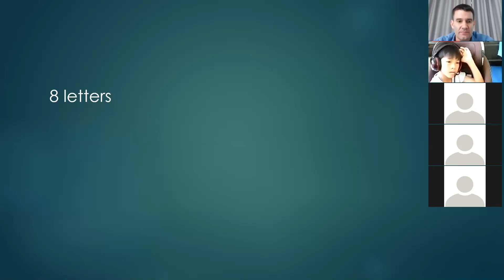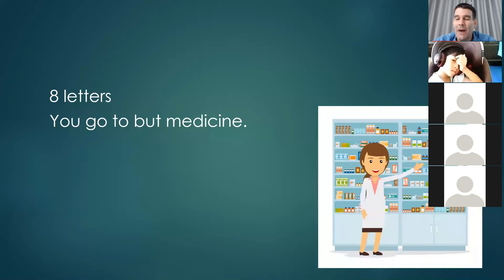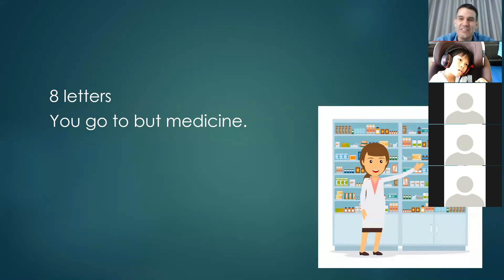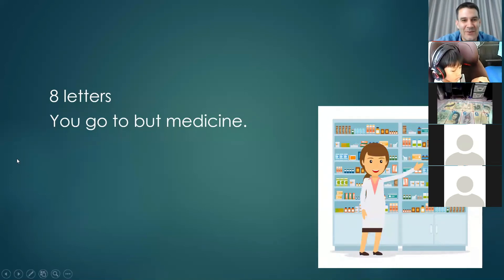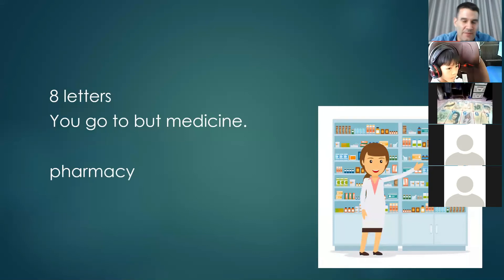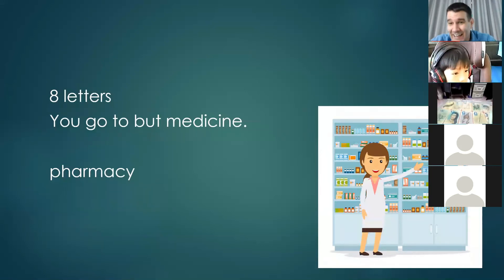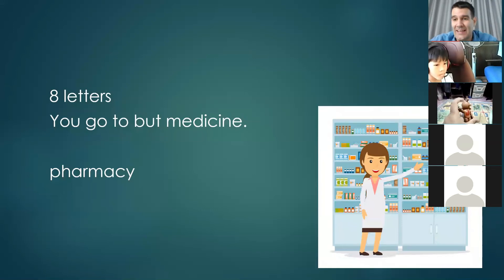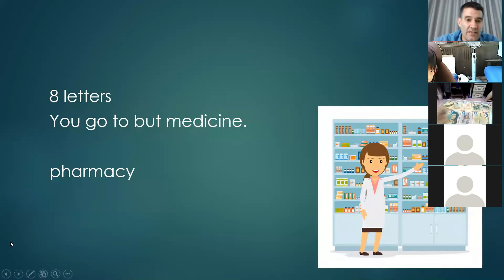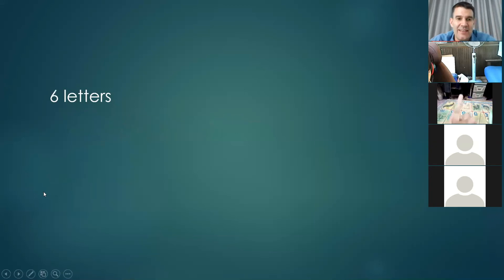The next one is eight letters — it is a place you go to buy medicine. Not a hospital — just for medicine. You could say a 'drug store,' yes, or another word is 'pharmacy.' Pharmacy and drug store mean the same thing. Pharmacy starts with P-H, and in English P-H makes an F sound — like 'elephant' or 'photo.' So pharmacy starts with an F sound, spelled P-H-A-R-M-A-C-Y.